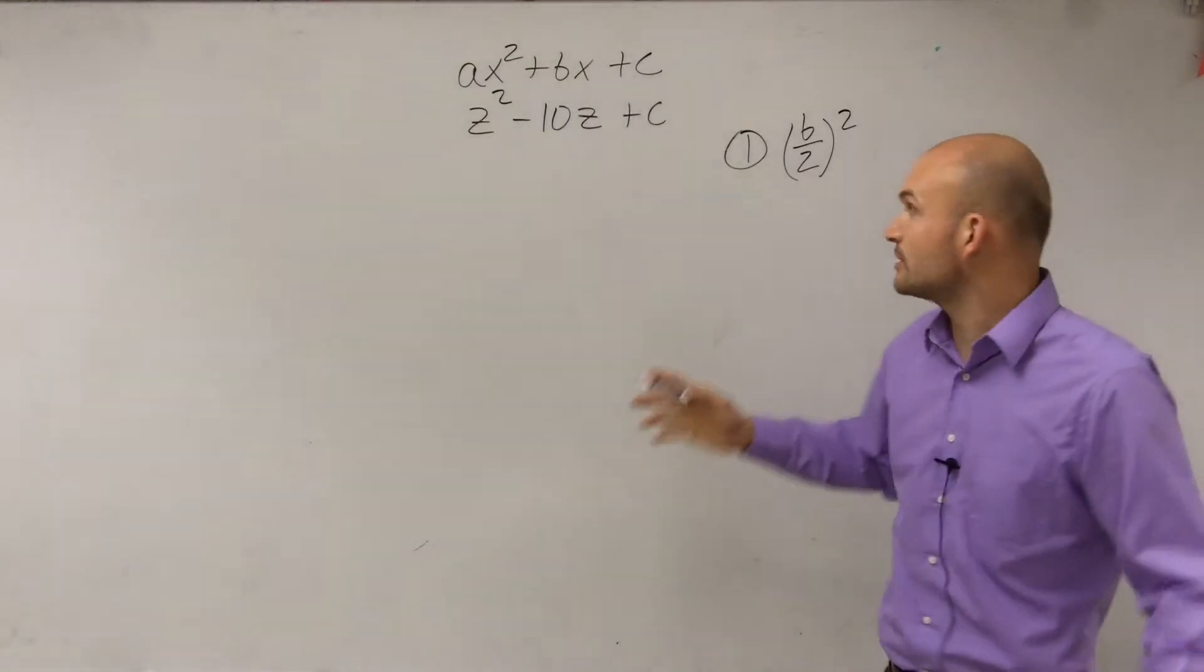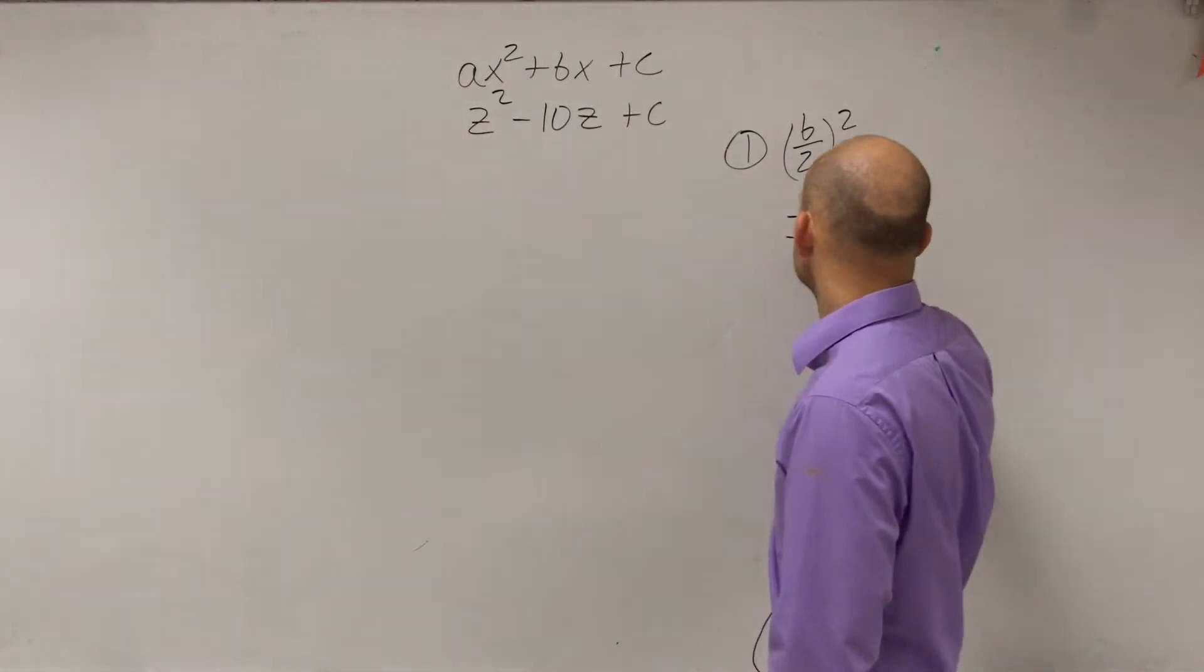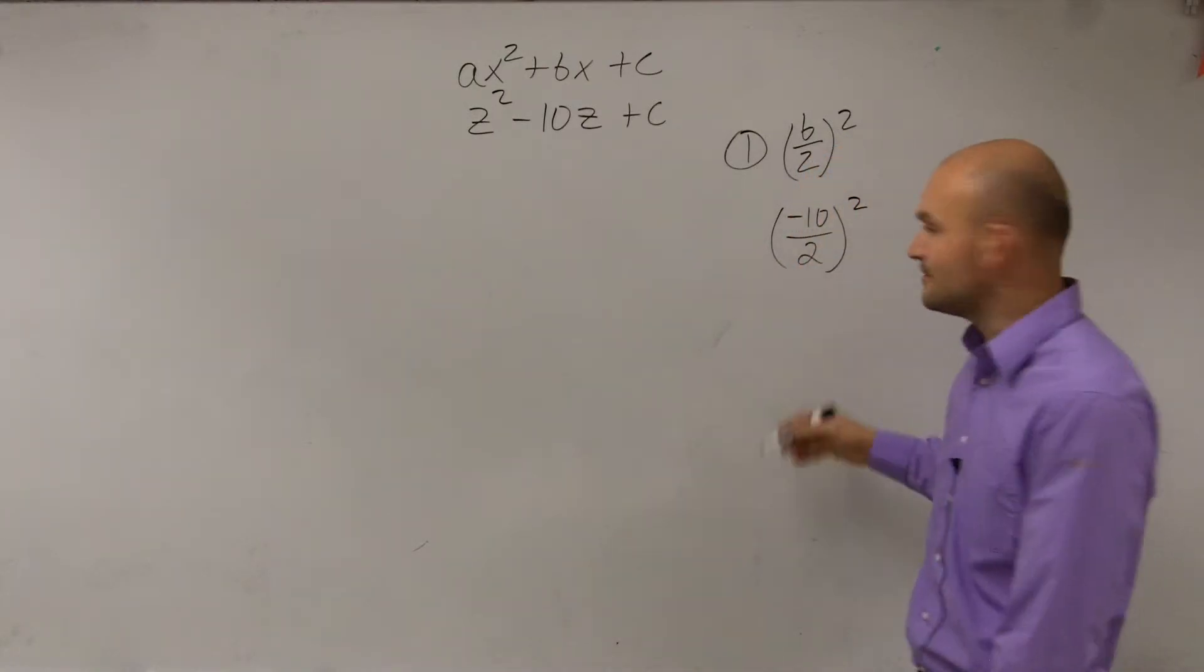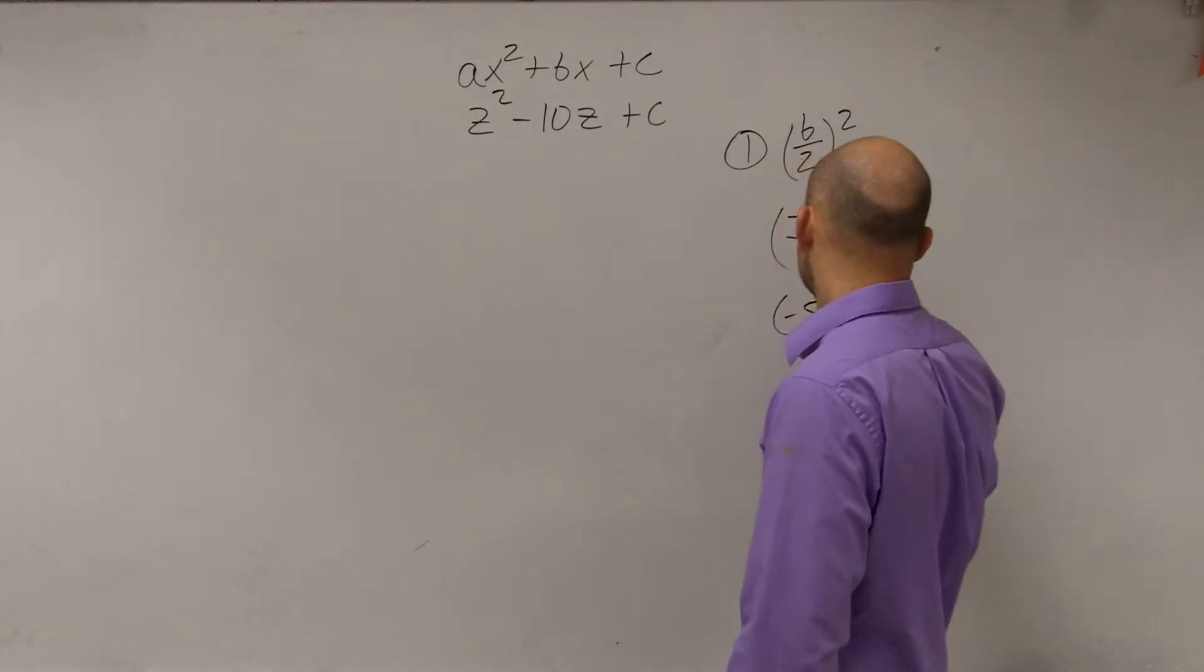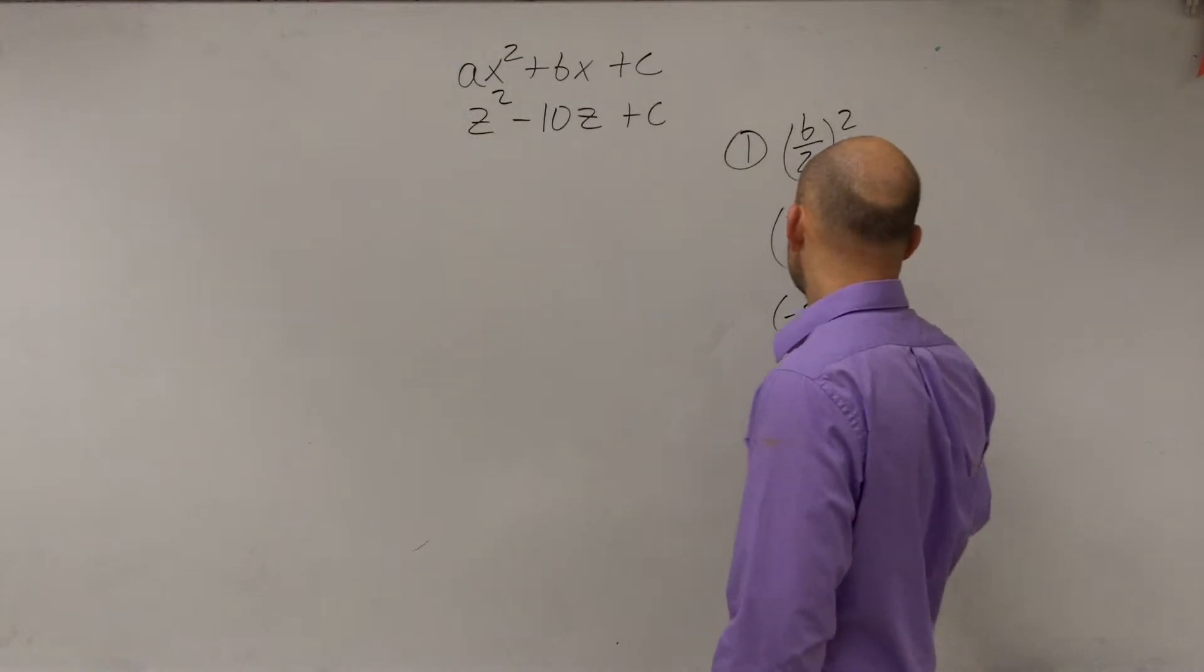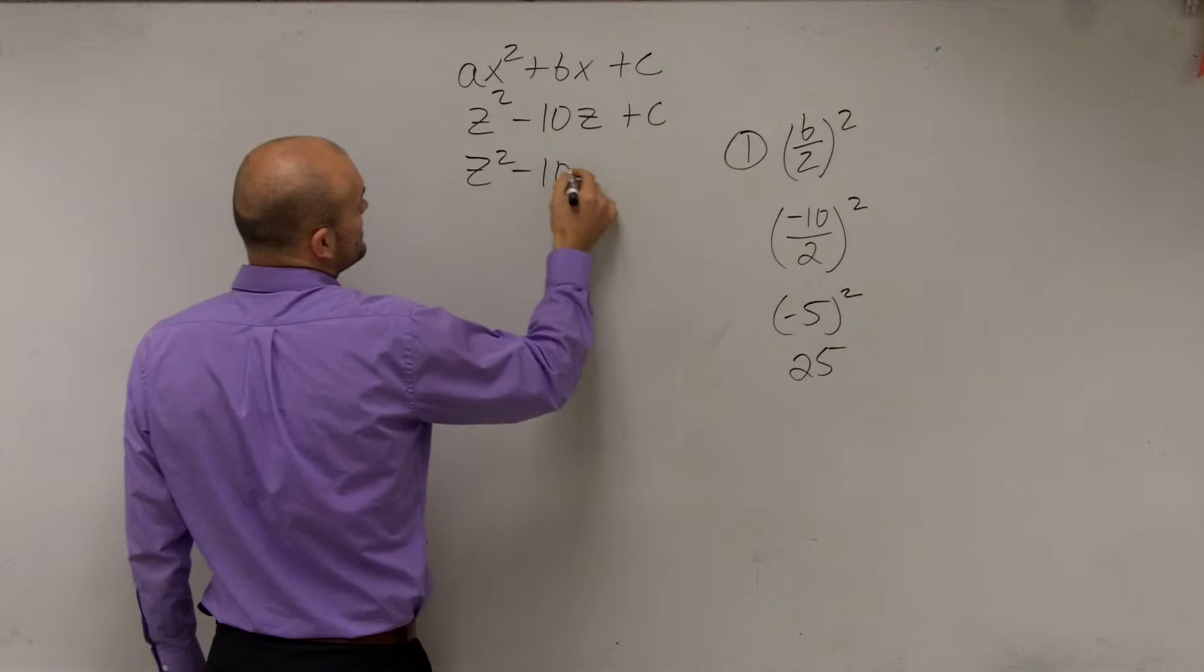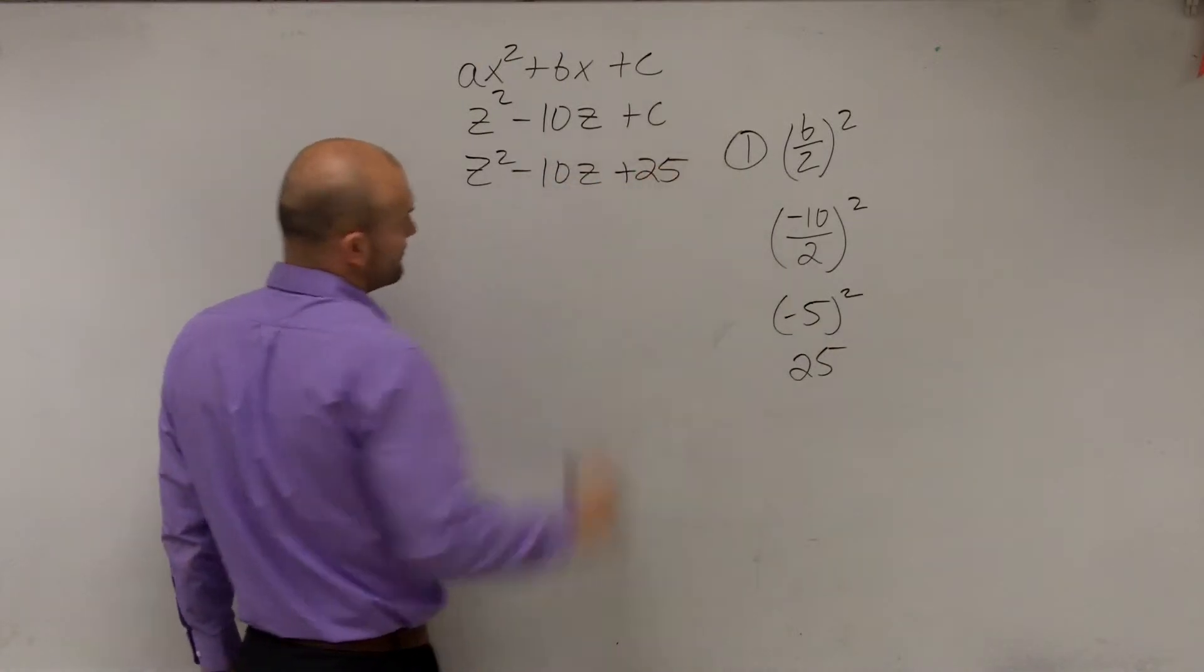So these problems are all we're going to do. We're going to take negative 10 divided by 2 and square it. Well, negative 10 divided by 2 is negative 5 squared equals 25. Therefore, we have z squared minus 10z plus 25.